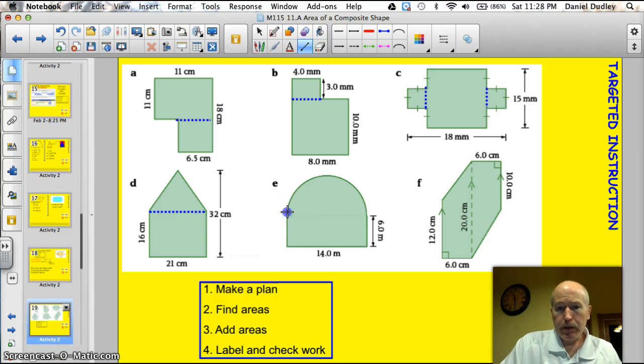What would you do on E? Well, I see a half circle. So if I found the whole circle and cut it in half, I could find the area of this. And then I could find the area of this one right here. This is kind of tricky, but the radius of this circle is going to be 7 because the diameter is 14.